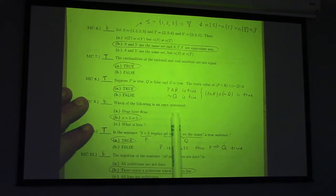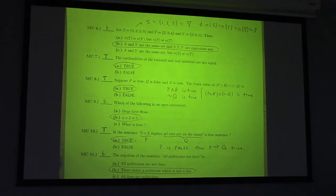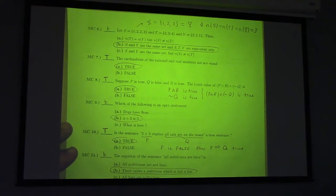Which of these is an open statement? X plus three equals five is the open statement because it has a variable in it. What is love is not even a declarative sentence.